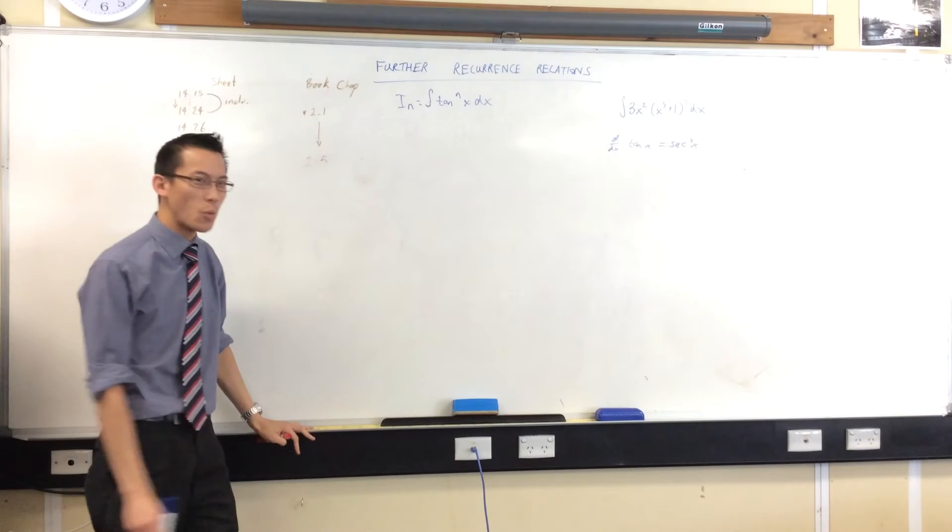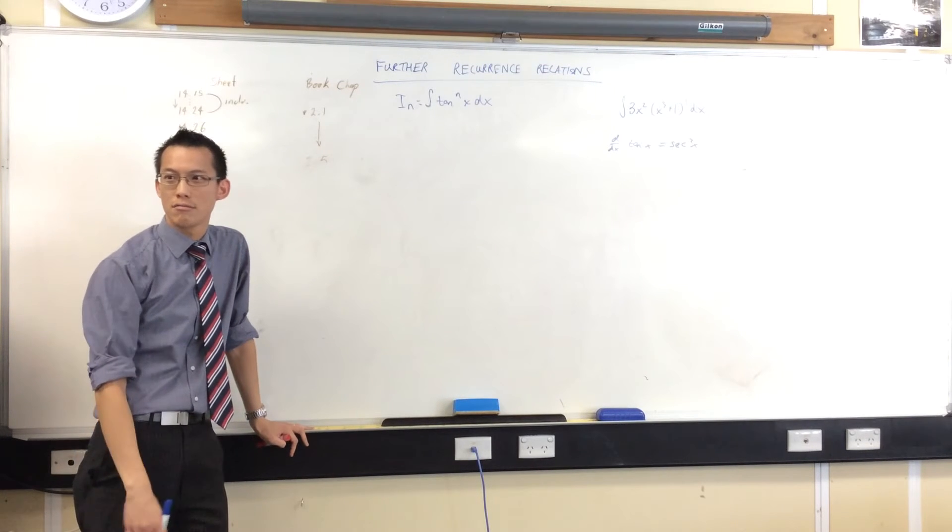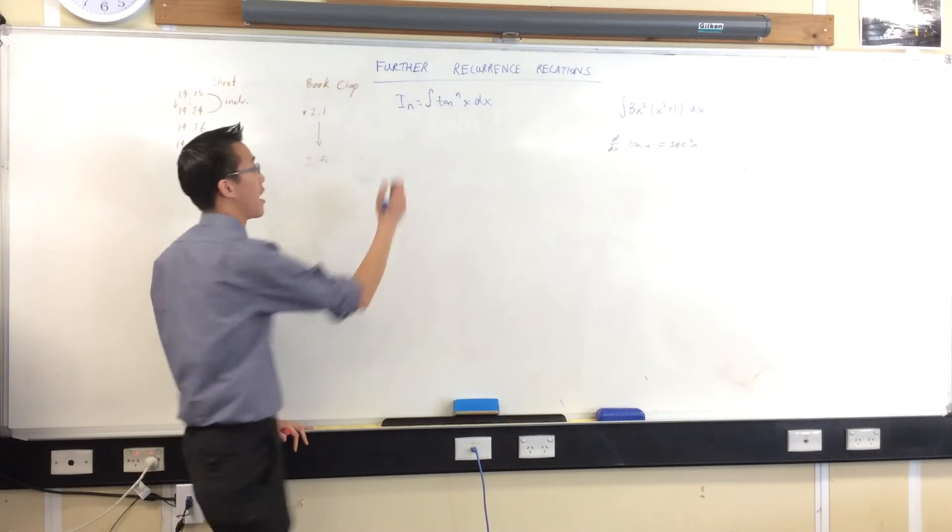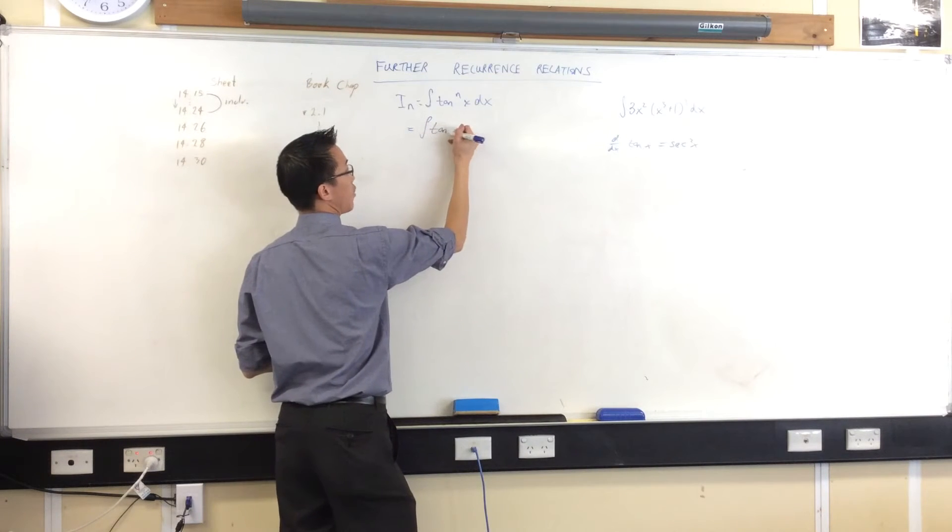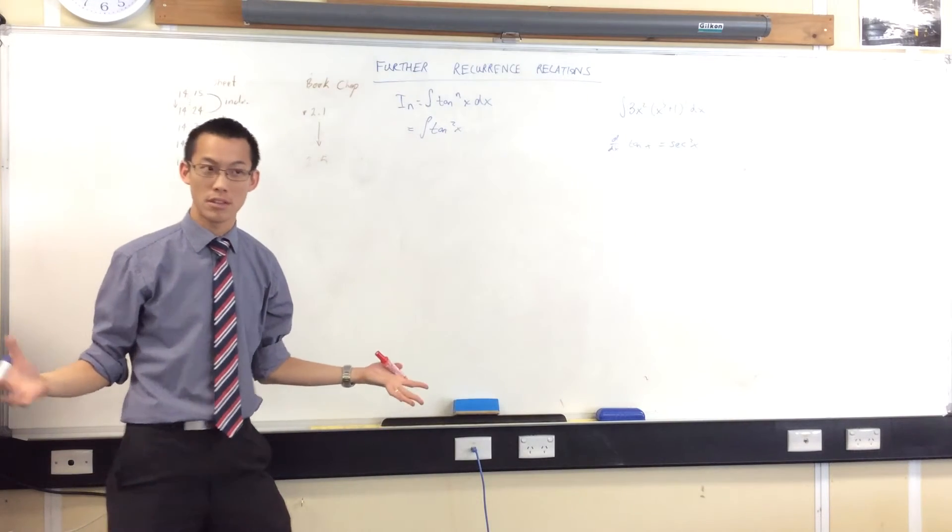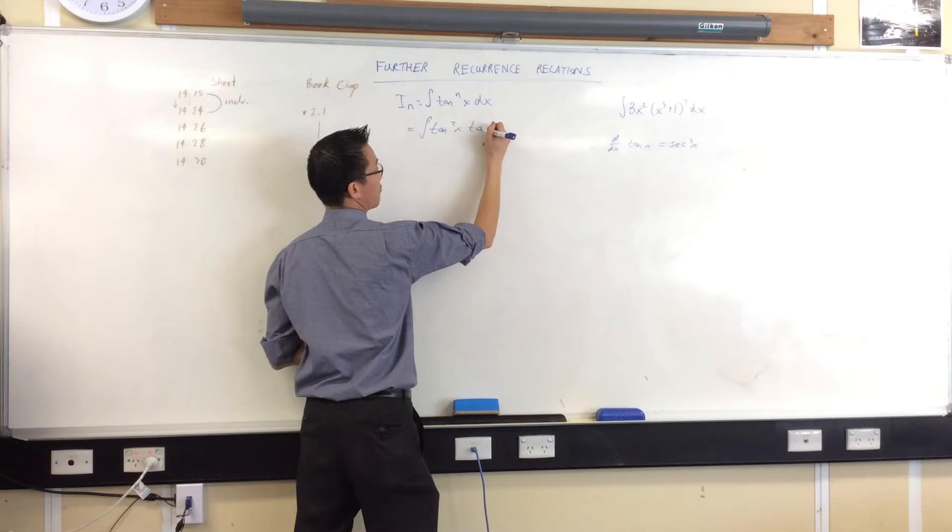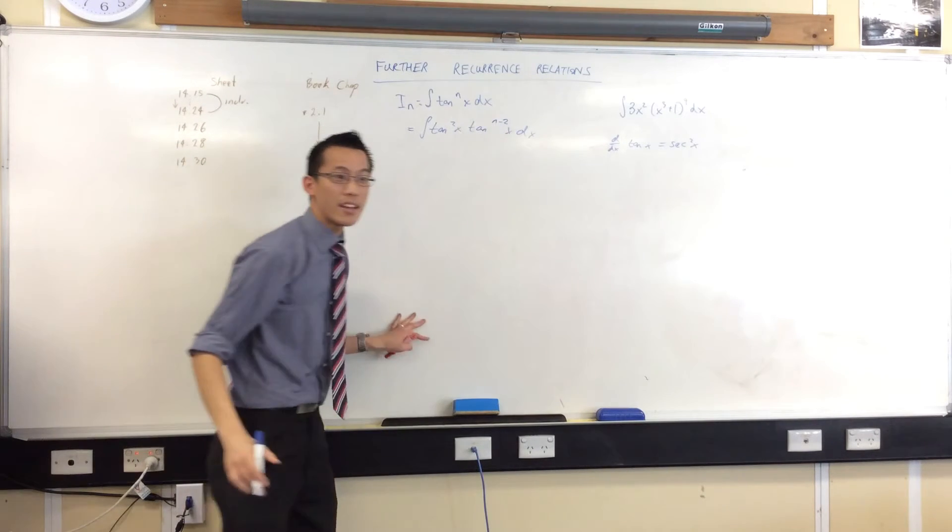So how will I get a sec squared out of this guy? How do we usually get it out of tans? I need a tan squared, don't I? So, therefore, that leads me to write this. I'll write tan squared x. If I've taken out two, how many do I have left? N minus two of them. Okay, there you go.